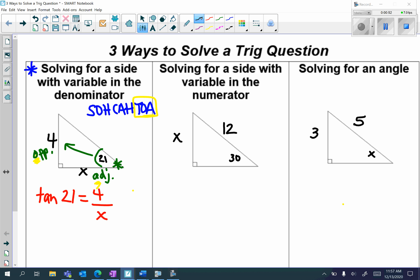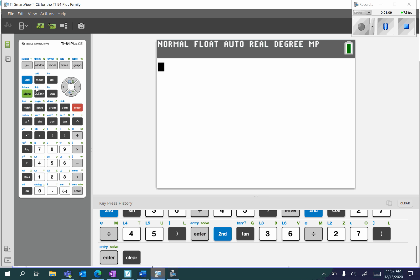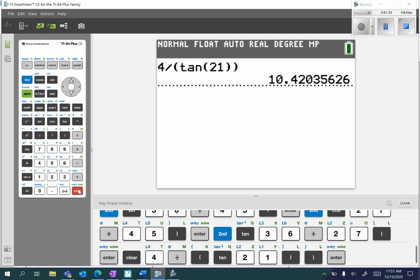Now notice my variable is in the denominator, so when this happens, I'm going to switch positions with the tan of 21. So I'm going to have x is equal to 4 divided by tan of 21. So I'm going to go to my calculator, type in 4 divided by tan of 21. Don't forget you have to be in degree mode. I should get 10.42, so I'm going to go with 10.4.